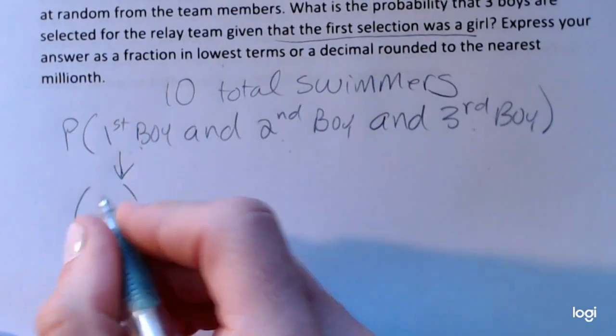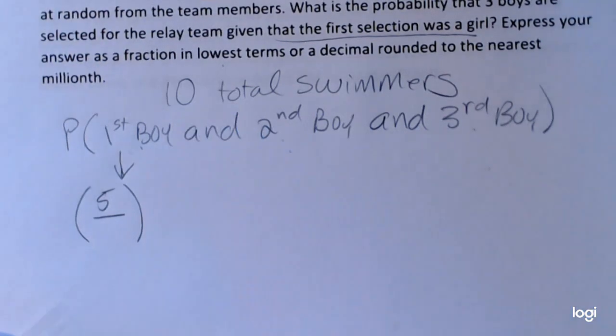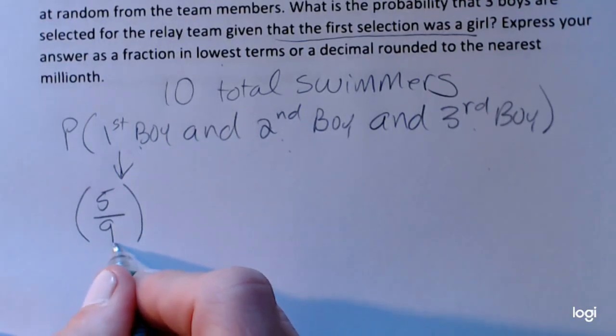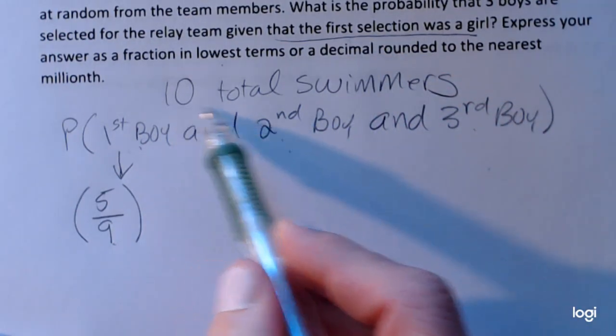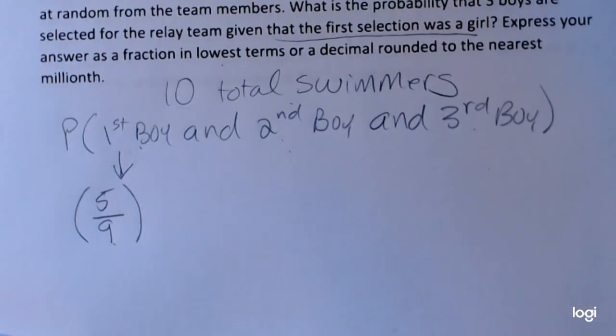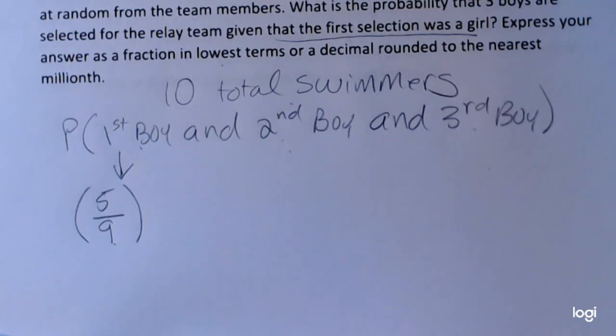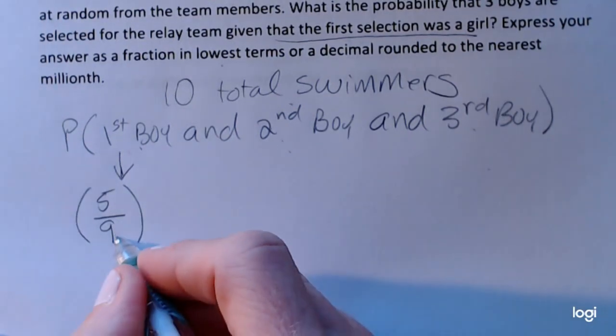I have five boys and 10 total swimmers, but a girl has already been selected. So the sample space right here is reduced. I wouldn't put 10 in here. I would put nine because we have already selected a girl. I no longer have 10 swimmers to select from. So because the sample space is reduced, I necessarily have dependent events. So this is for the first boy.